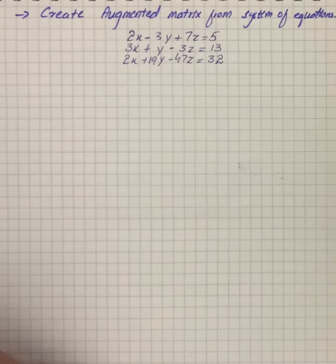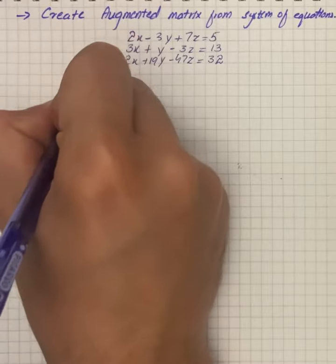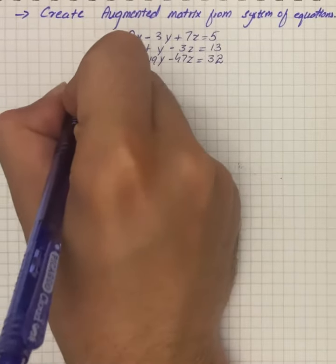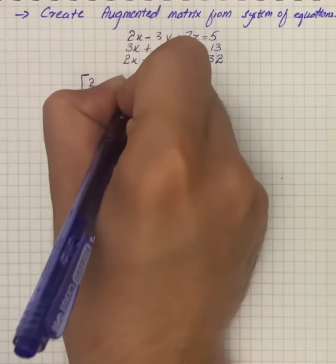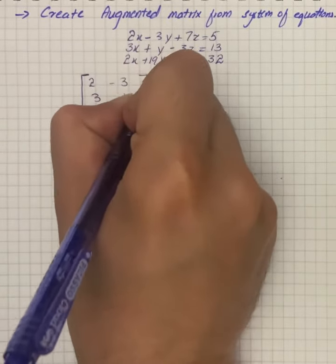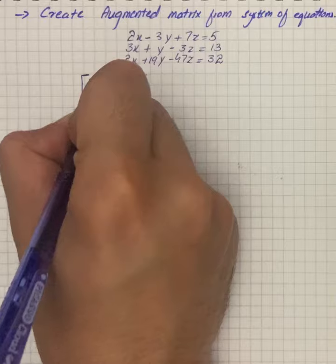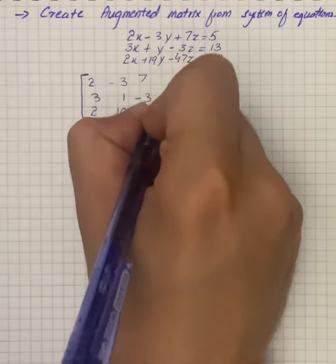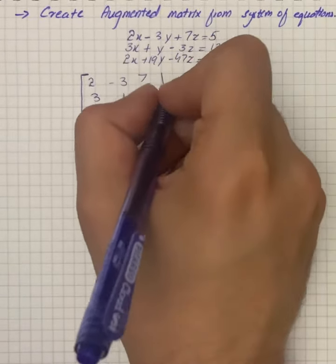Here we have a system of equations to solve. First of all, we will rewrite the system of equations in augmented matrix. So we have 2, -3, 7, 3, 1, -3, 2, 19, and -47.